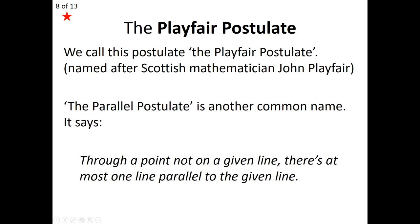Let me introduce the Playfair Postulate, named after the Scottish mathematician John Playfair. In his writings, there were many ways to express this postulate showing that there is precisely one line that passes through a given point. His writing leaves some flexibility. He wrote: through a point not on a given line, there is at most one line parallel to a given line. He uses the phrase 'at most one,' which means we can have zero or at most one parallel line through any given point not on the line.